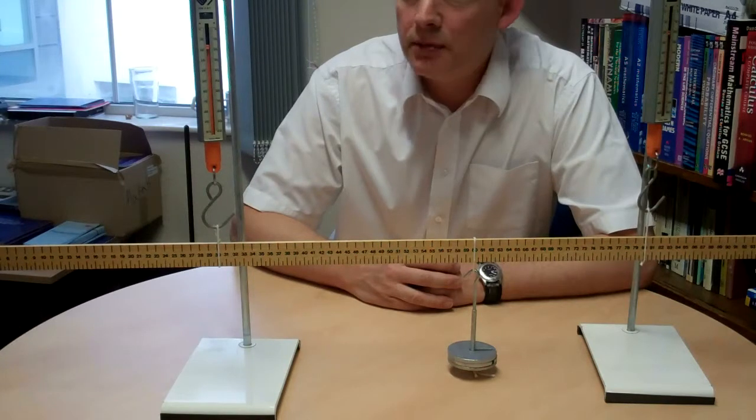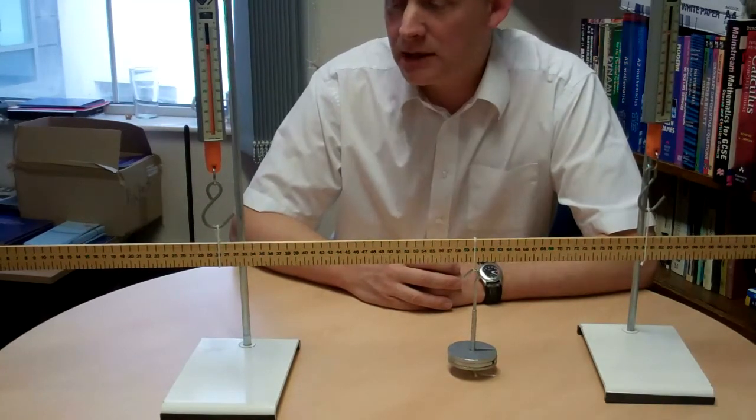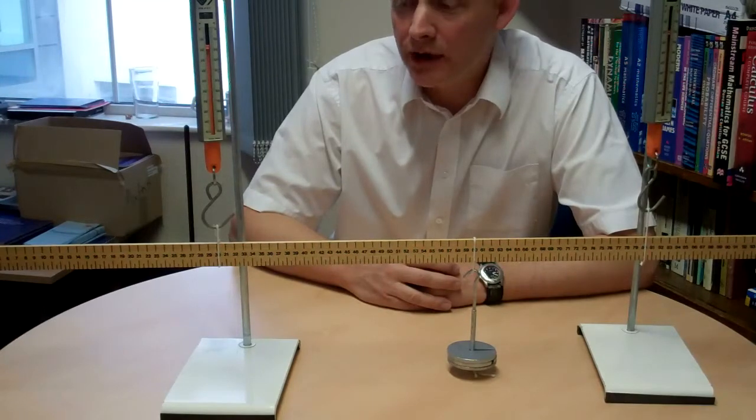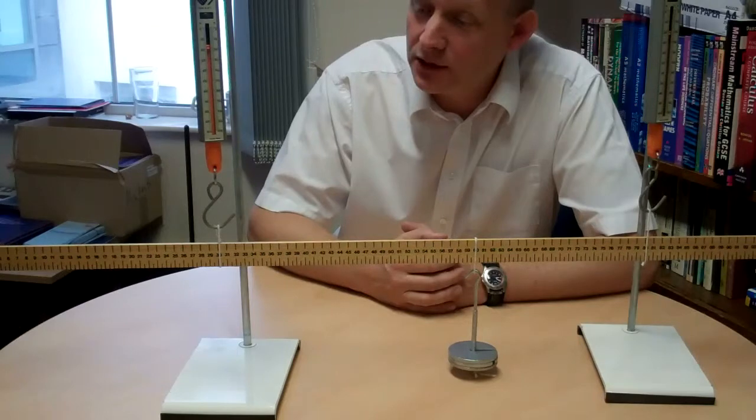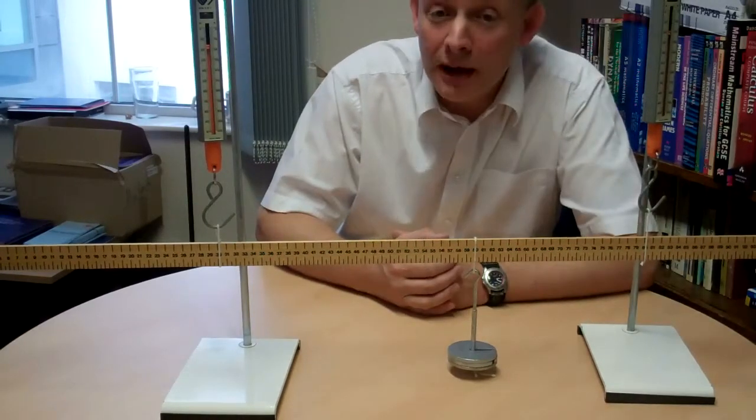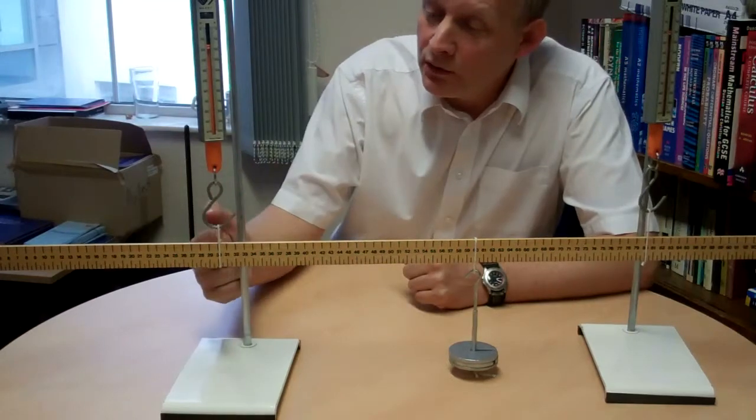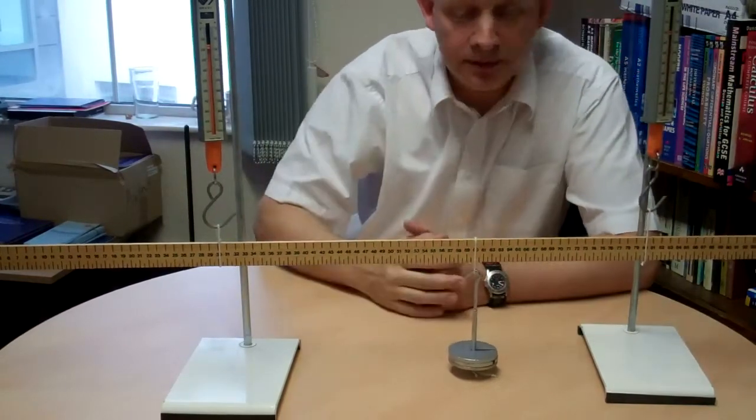Here is another simple experiment. We have a metre rule, and if you've done the earlier experiment you'll know that the mass of the metre rule is 120 grams. We've suspended a mass from the metre rule. This mass has 400 grams. We've also suspended here a force metre and another force metre.